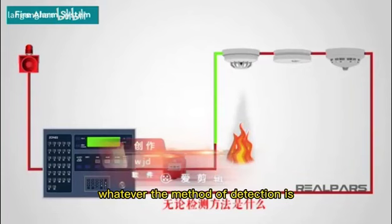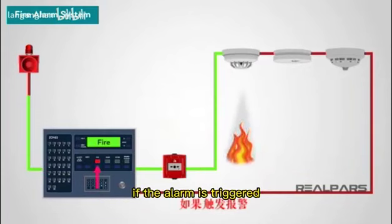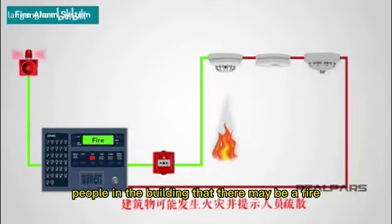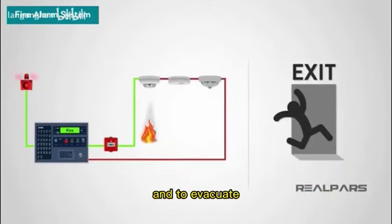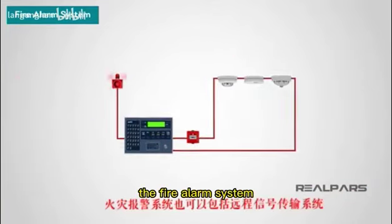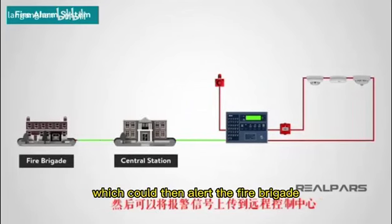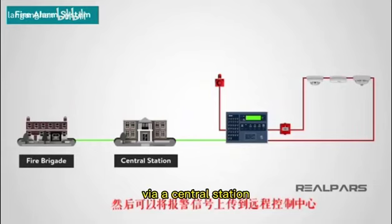Whatever the method of detection is, if the alarm is triggered, sounders will operate to warn people in the building that there may be a fire and to evacuate. The fire alarm system may also incorporate a remote signal system which could then alert the fire brigade via a central station.